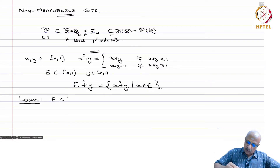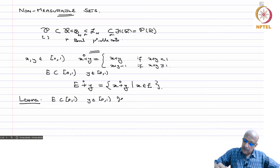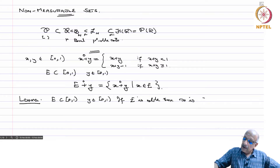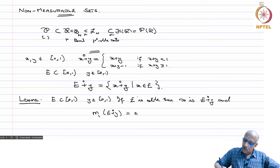The lemma states: if E is contained in [0,1) and y belongs to [0,1), and if E is measurable — always remember when I say measurable I mean Lebesgue measurable — then so is E plus y, and m1 of E plus y equals m1 of E.